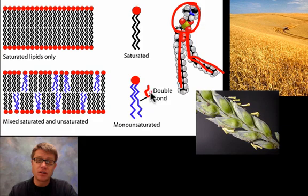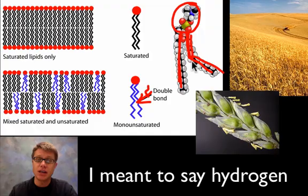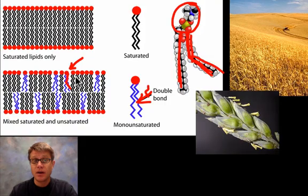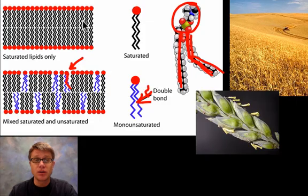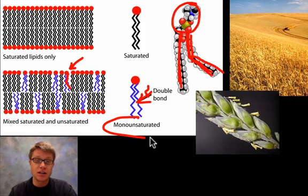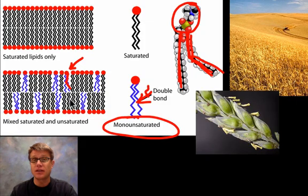If you get a double bond because you lack oxygen, there will be a kink on the tail. Those kinky tails cause the phospholipids to move farther apart, so they can't get quite as close together. As the temperature gets colder and colder, these phospholipids are going to get closer and closer together. So a way to deal with changes in temperature is to have more of these unsaturated fatty acids in the tails, so they can't pack as closely together.